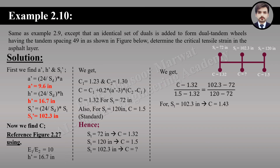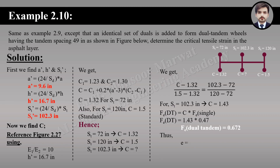From the previous example the strain factor for single wheel is 0.47. Multiplying by conversion factor C equals 1.43 gives the strain factor for dual tandem wheel equal to 0.672. Putting this into the critical tensile strain equation gives epsilon equals 3.03 × 10⁻⁴.